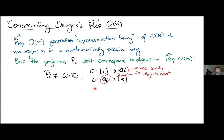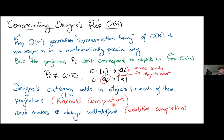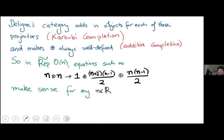Rep̂(O(N)) satisfies everything we'd want to generalize O(N) representation theory to non-integer N, but it's not quite perfect: the projectors don't correspond to actual objects in the category. The Deligne category Rep̃(O(N)) fixes this through two steps: Karoubian completion — adding objects for each projector so idempotents can be split — and additive completion — ensuring we can always take direct sums. After these two operations, we have a full symmetric tensor category where N⊗N → 1 ⊕ N ⊕ S ⊕ Λ makes sense for any real N.